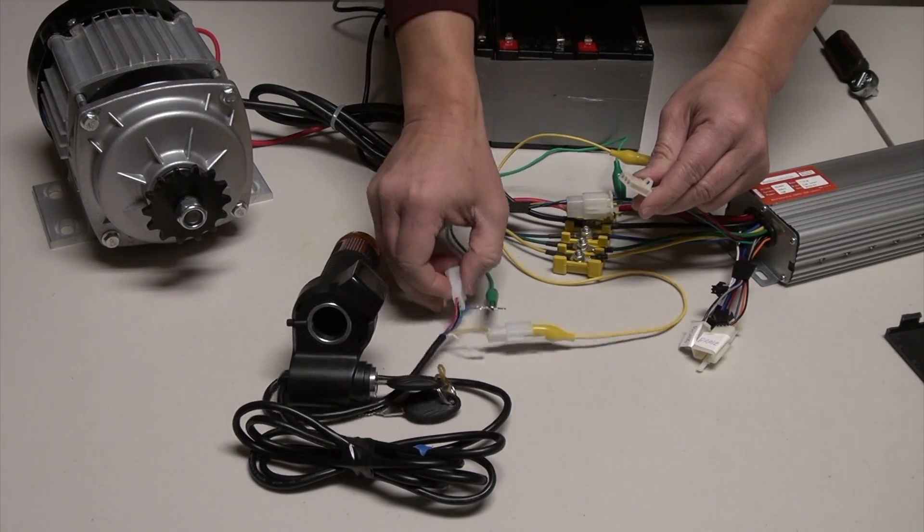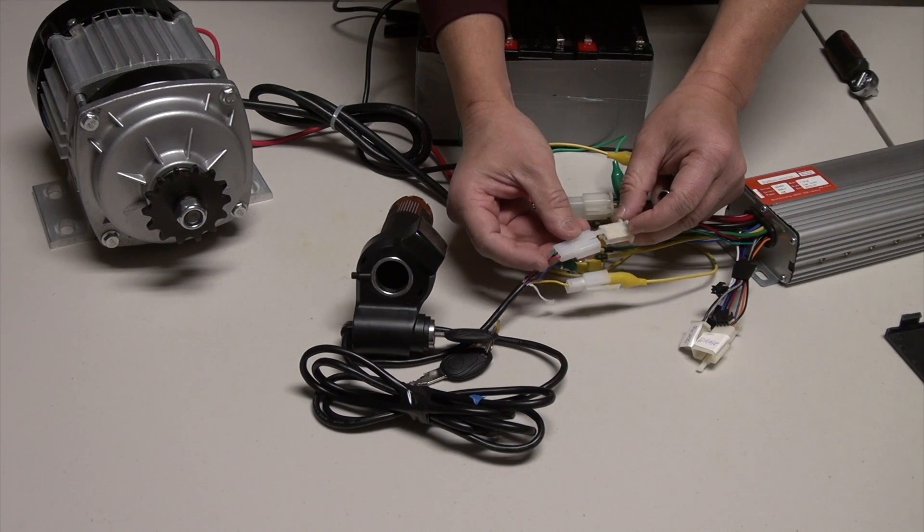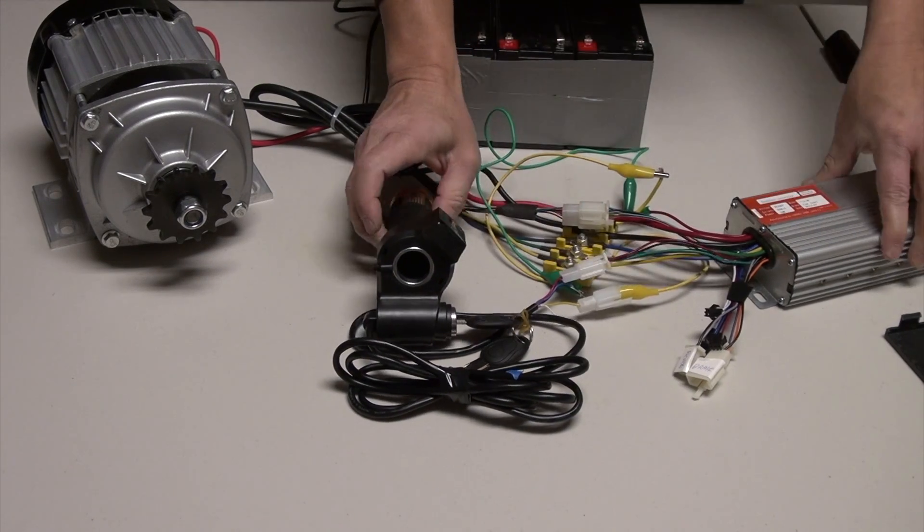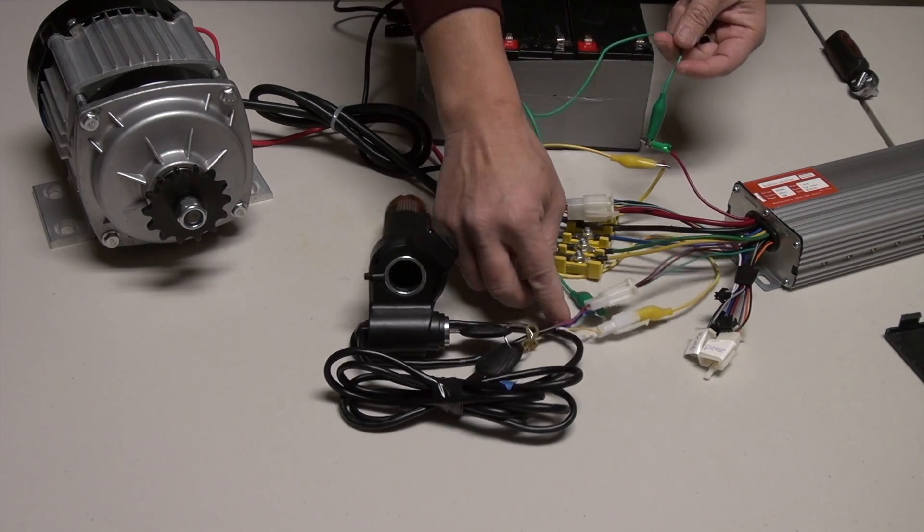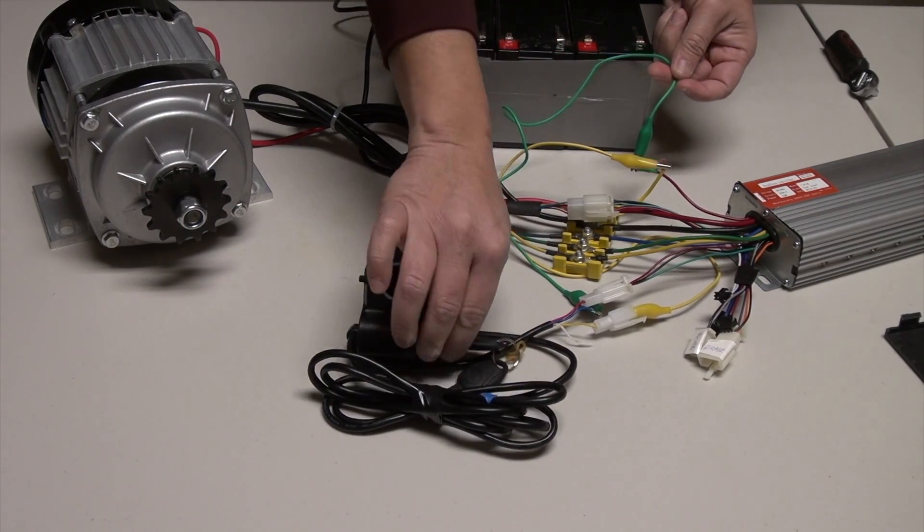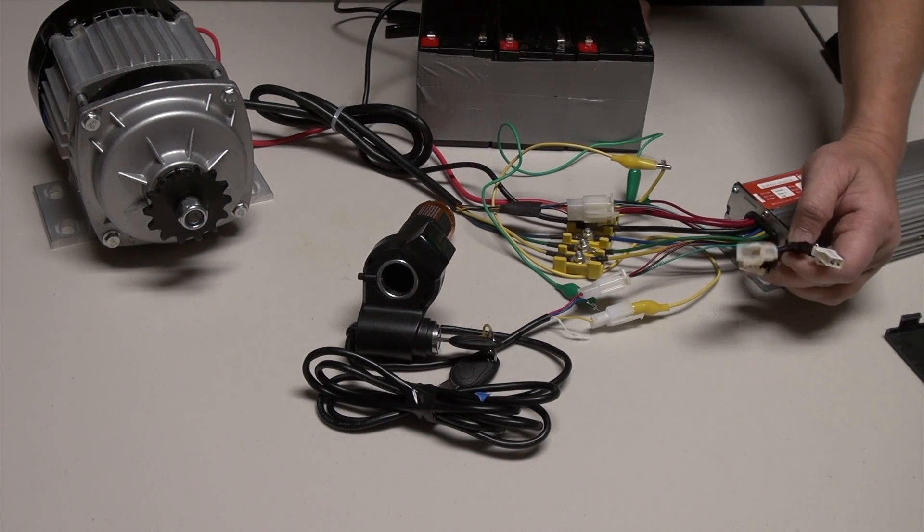The next one is the throttle. As you see here, three wires match. Plugging it in. Okay, so now you have a connection to the switch as well as the throttle. The rest of the wires here I don't need, so I'm just going to not use them.